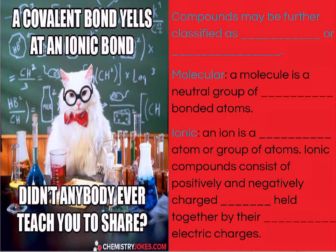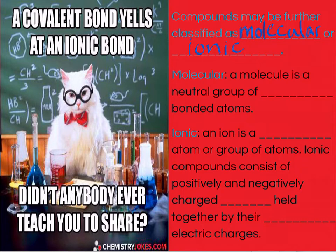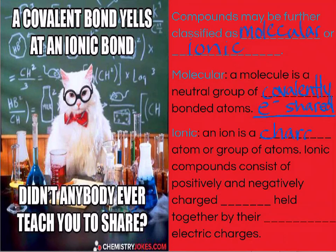Another way that we classify chemical compounds is by the types of bonds that they share. We could have molecular substances or we could have ionic substances depending on what type of bond exists between the atoms. In molecular compounds, the molecule is formed from a neutral group of covalently bonded atoms. By covalent, we mean that the electrons are shared — evenly or unevenly — between the atoms. In an ionic bond, the bond exists because there is a charged atom or a charged group of atoms that stick to other charged particles because opposites attract.